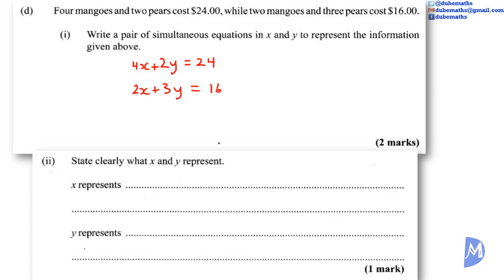State clearly what X and Y represent. So 4 by X plus 2 by Y gives $24. 4X. So the simultaneous equation is in terms of dollars. So 4 multiplied by X. What could X be to get the left hand side in terms of dollars? X represents the cost of 1 mango in dollars, and Y represents the cost of 1 pear in dollars.